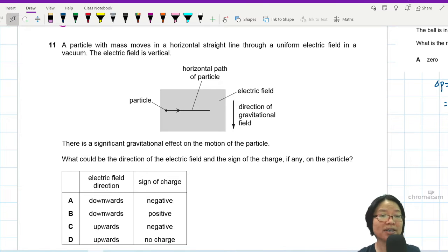Question 11. A particle with mass moves in a horizontal straight line through a uniform electric field. It's very strange to see electric field in question 11, but okay CIE, you are not obliged to be consistent.